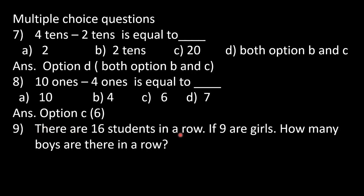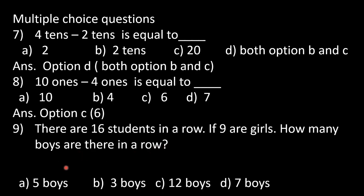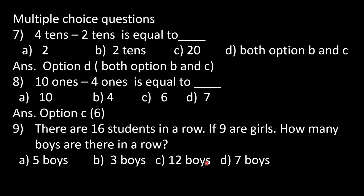Question number 9: there are 16 students in a row — girls as well as boys. If 9 are girls, how many boys are there in a row? Options: 5 boys, 3 boys, 12 boys, 7 boys. Keep 16 in mind and count backward 9 steps: 15, 14, 13, 12, 11, 10, 9, 8, 7. Answer is 7 boys, option D is correct.